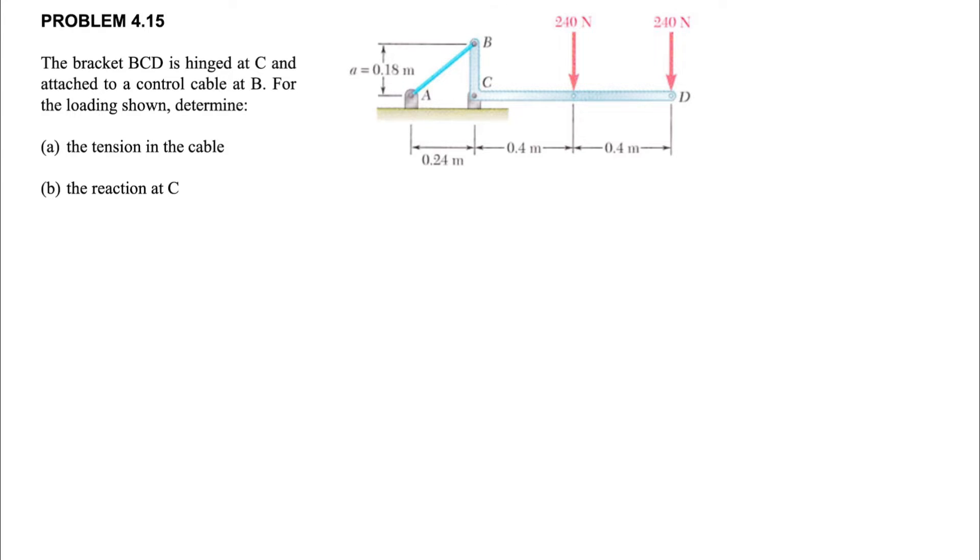Hey guys, welcome back. On today's video we're going to solve another question about the moment in 2D. We have the bracket BCD that is hinged at C and attached to a control cable at B, and we need to determine the tension in the cable in part A, and in part B we need to find the reaction at C.